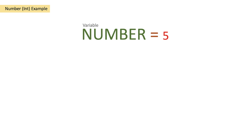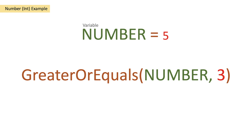So we're going to start with a variable number of 5. This is an integer variable. And then we're going to pass that variable into our greater or equals function, and we're also going to pass another argument into our function which is 3. So in this instance we're saying, is 5 greater than or equal to 3?